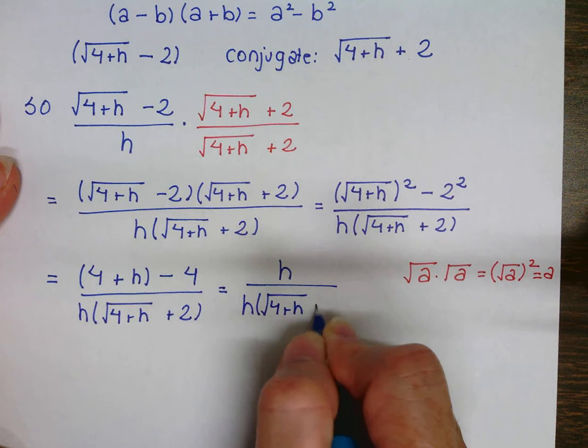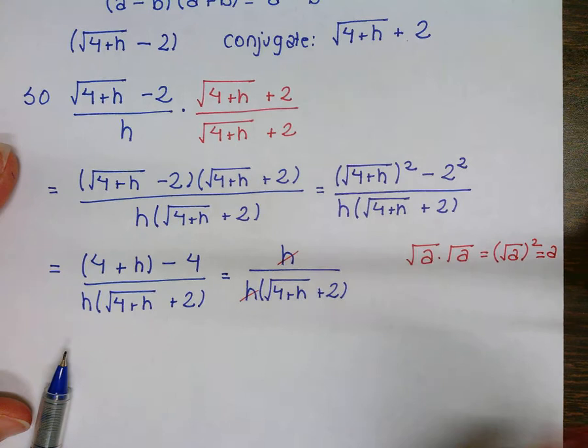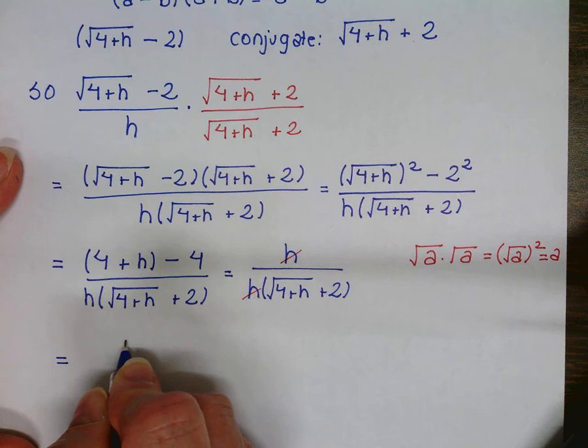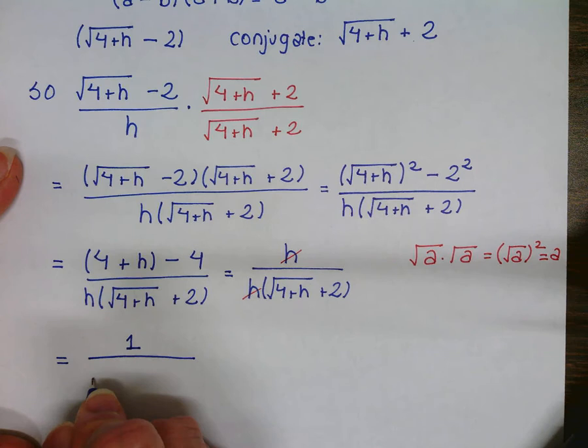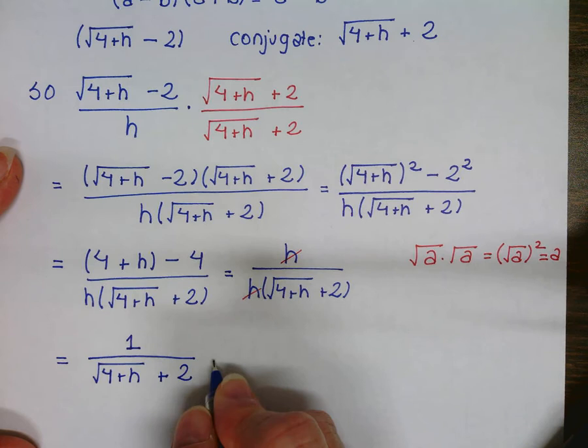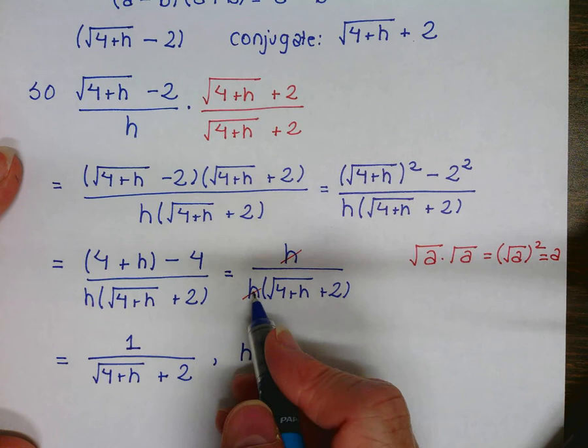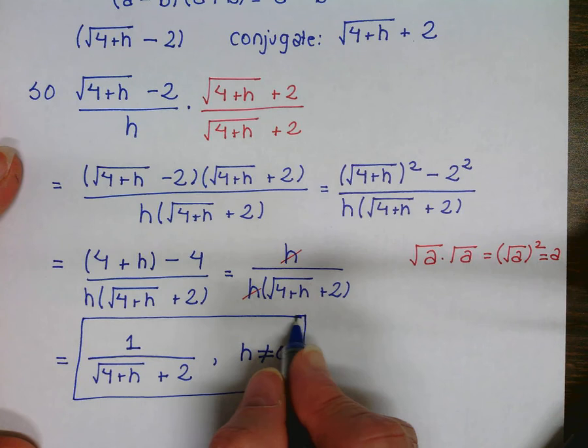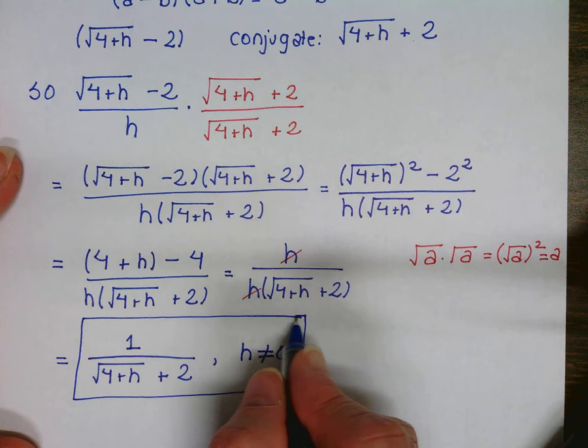Now we see that we have a cancellation — with these difference quotients you're going to expect that. We're left with just 1 in the numerator, giving 1 over (√(4+h) plus 2) as our denominator. Remember the excluded value: h can't be 0 because we've eliminated that value. That gives us some good examples of rational expressions, fractional expressions, and negative exponents — all things that will be very important as you move forward. Thank you for your attention.